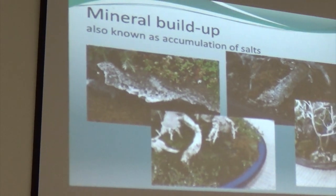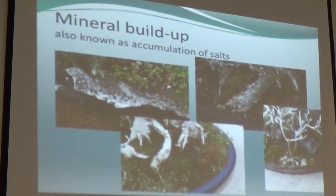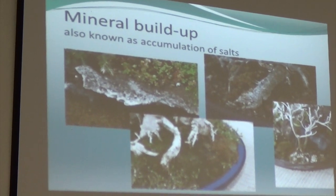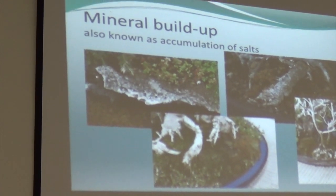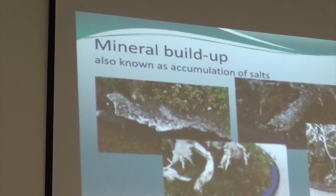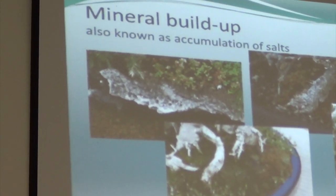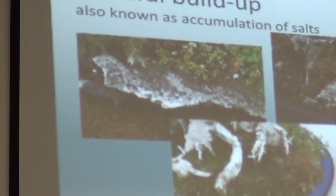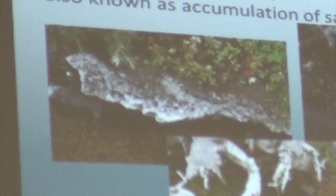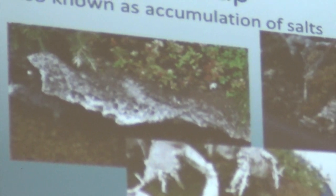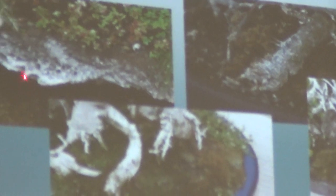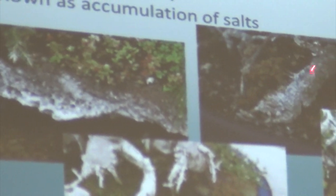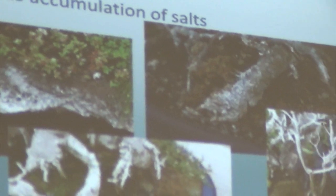What happens is a lot of the minerals that are in the water — as the water gets used, the minerals are also absorbed, but a lot of it is in too much abundance. I wanted to show you that the minerals that come out of the water accumulate as salts. You can see right here at the edge of the rock and in the tree roots.